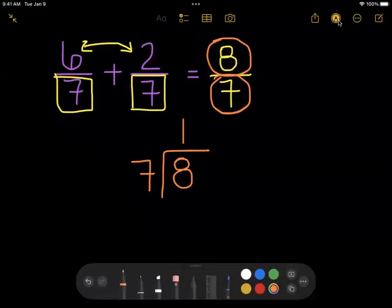Seven goes into eight one time. One times seven is seven, and when I subtract these two, I get one left over.